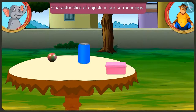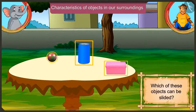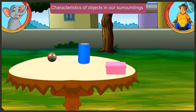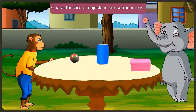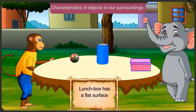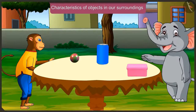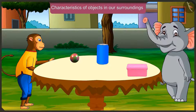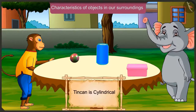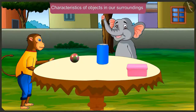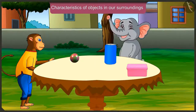Now tell me which of these objects can be moved? This lunch box has a flat surface — we cannot roll it like a ball, we can only slide it. And the tin can? This tin can has a cylindrical shape, so we can put it upright and slide it, and also roll it.